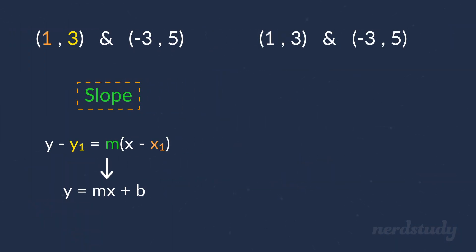We know that the slope formula is y2 minus y1 over x2 minus x1. So, this would be 5 minus 3 over -3 minus 1. If we simplify this, what we get is 2 over -4, which reduces down to -1 over 2.